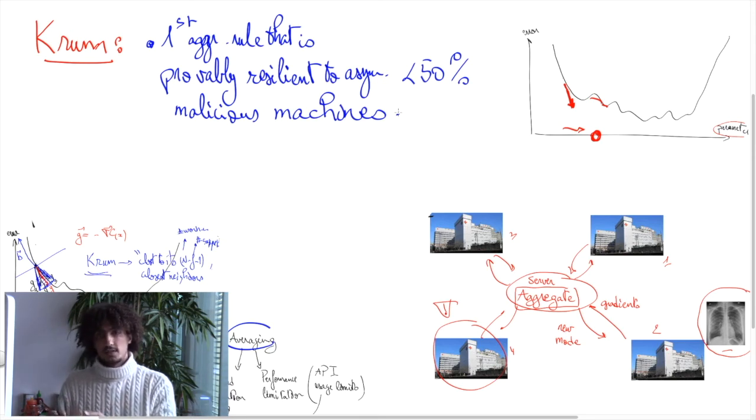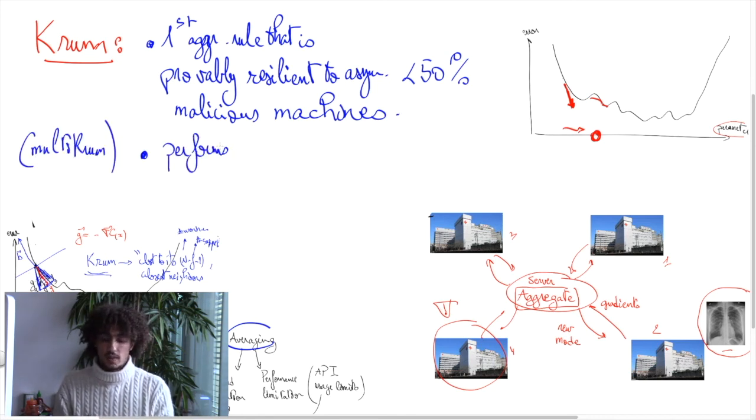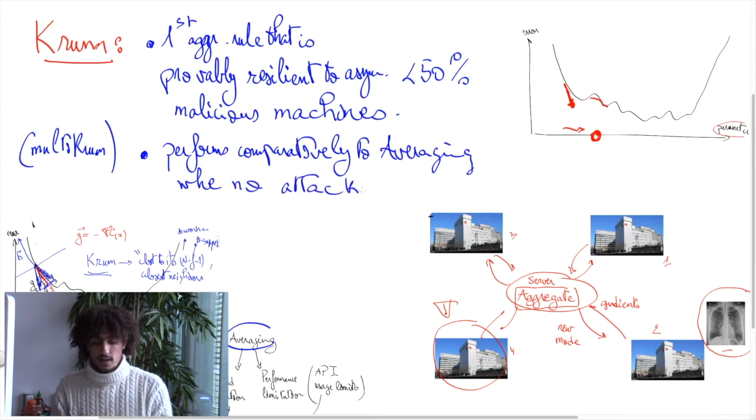Of course, there is a catch, which is that Krum is not as fast as averaging when there is no attack. So we present an optimization we call multi-Krum, and we experimentally show that Krum performs comparatively to averaging when there are no attacks.